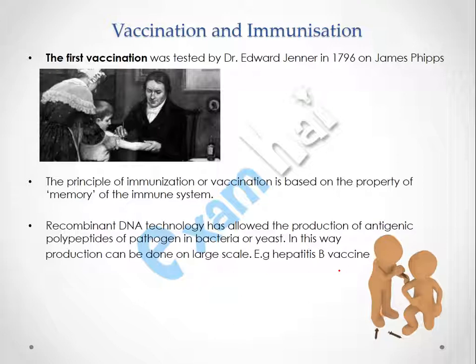Jenner observed that persons working with cattle — like farmers and dairy workers — did not suffer from smallpox, and if they did get infected, they recovered very fast. This led him to conclude that exposure to cowpox had made these people immune to smallpox, and that vaccinating people with cowpox could protect them from smallpox. He thought the cowpox virus and smallpox virus were similar enough that antibodies developed against cowpox would also work against smallpox.